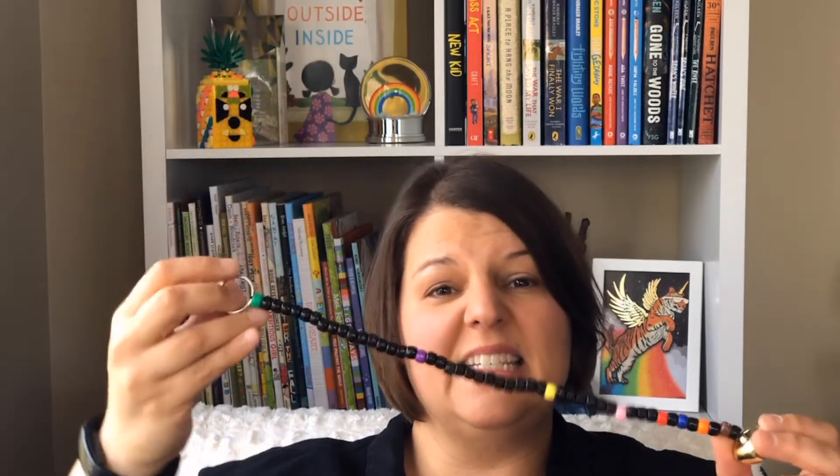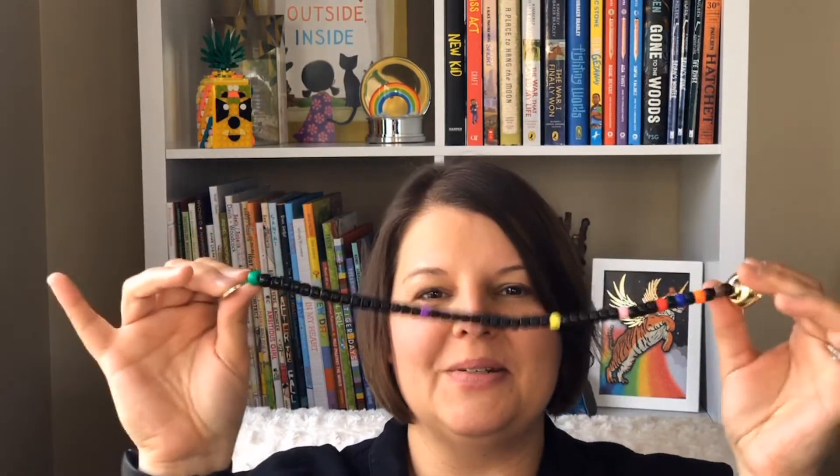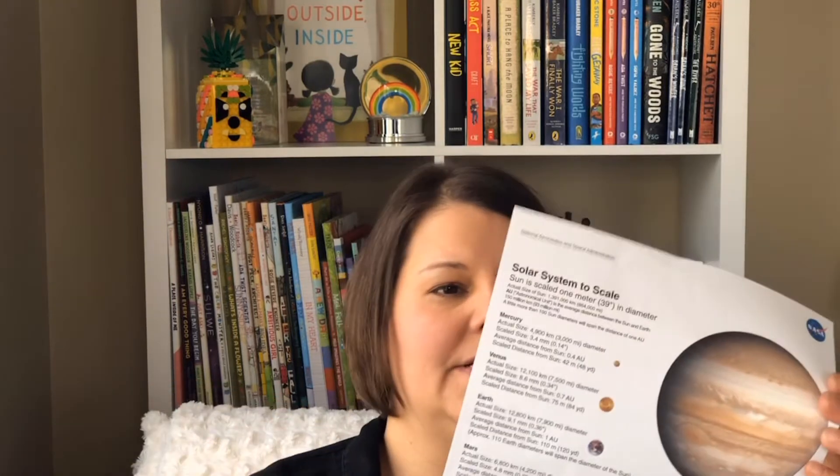What we are gonna make is this awesome scale of the distance between all of the planets in our solar system. This is your own little solar system right here. It's pretty awesome. Now we sometimes think about the differences in the sizes of the planets and this is a good scale that shows the difference.